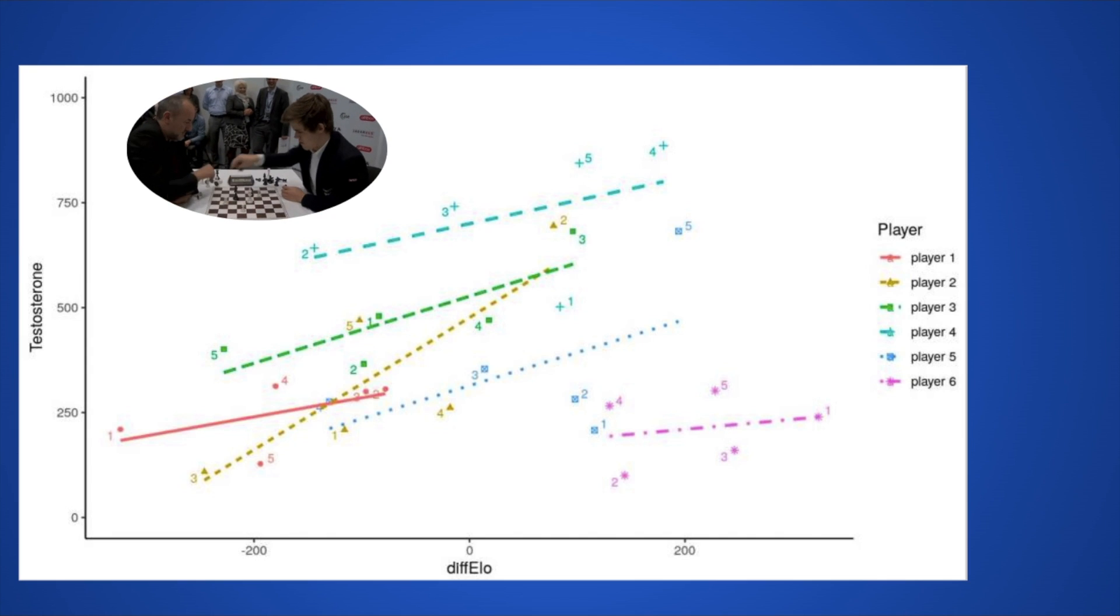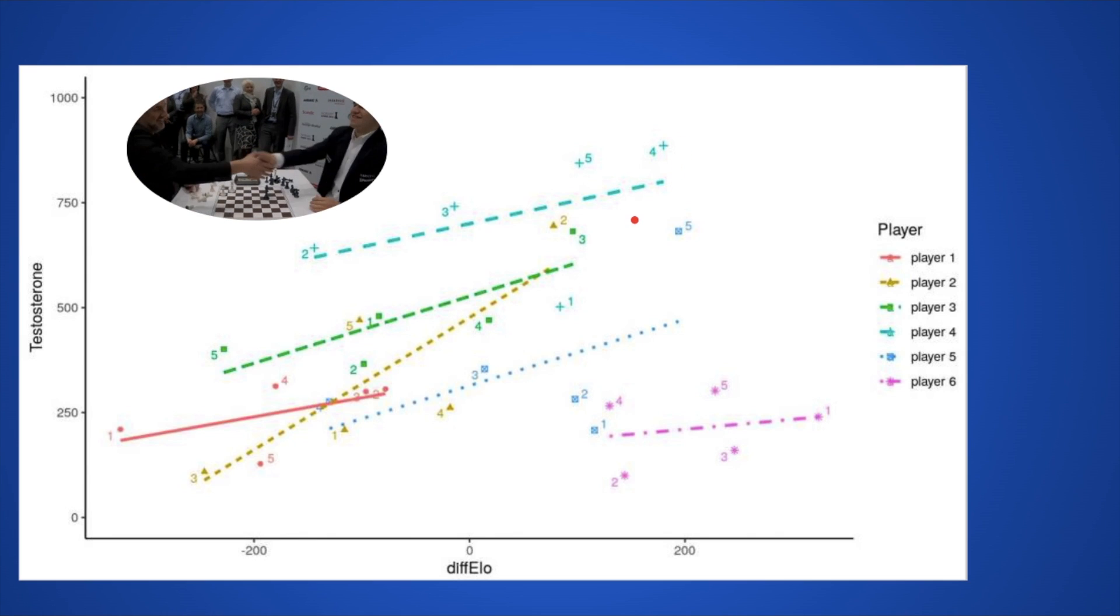I capped it at 700 percent to not make it too extreme, but this thing could have been a thousand percent increase, who knows. And all they did was play chess. Then some of the other guys also got big testosterone increases. Player six, he barely got anything.